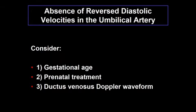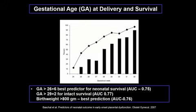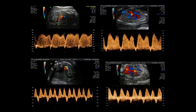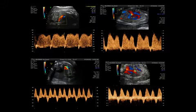For fetuses with absent or reversed diastolic velocities in the umbilical artery, three things must be considered: first, gestational age — the most important parameter for survival. A paper by Ahmed Bashad shows that after 29 weeks of delivery we have a very good chance of intact survival, and after 26 weeks there is also a good opportunity for survival. The other endpoint is an abnormal ductus venosus — when that sign appears, we probably must deliver.